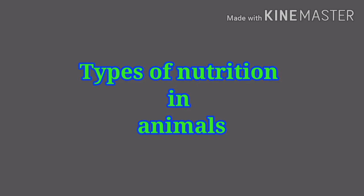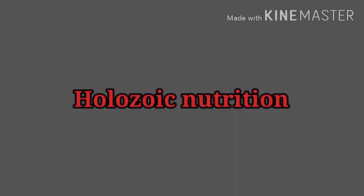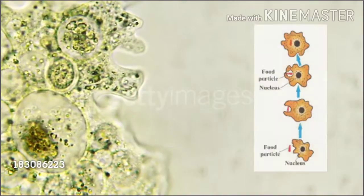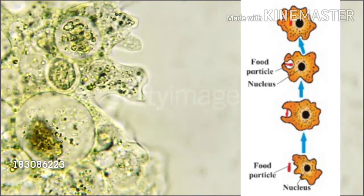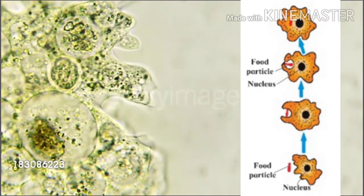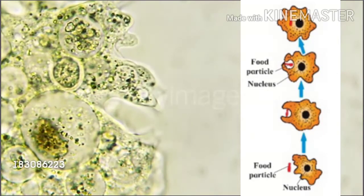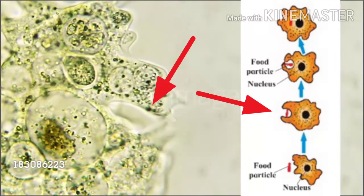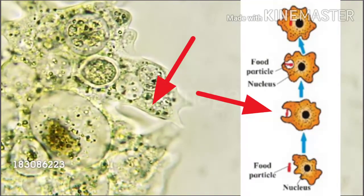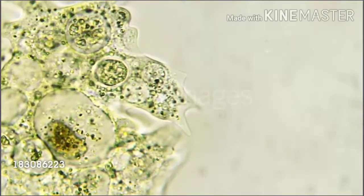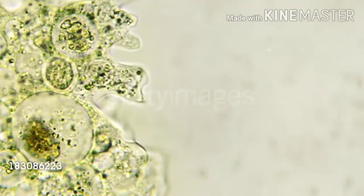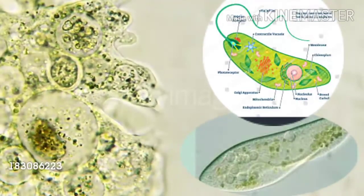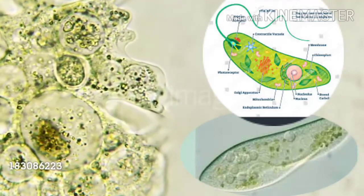Types of nutrition in animals — Holozoic nutrition. How does ingestion occur in unicellular animals like amoeba? Amoeba does not have organs like hands and mouth; it is a unicellular animal. It can take in food through any part of the surface of its unicellular body. It surrounds the food particle from all sides to take it into the cell. After that, it digests the food with the help of different enzymes. Undigested food is left behind as the amoeba moves further with the help of pseudopodia. In unicellular animals like amoeba, euglena, and paramecium, all the steps of nutrition occur within their unicellular body.